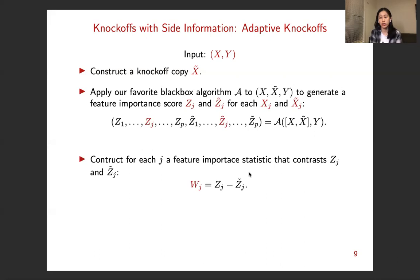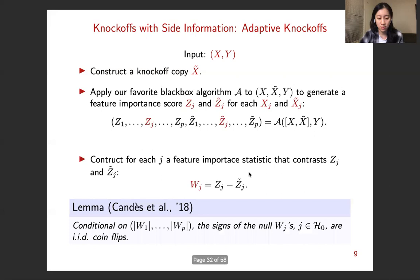And finally, we construct a feature importance statistic for each j, called wj. Wj is defined to be the difference between zj and zj tilde. So by such definition, a large positive value of wj indicates that feature j has a larger probability of being non-null.